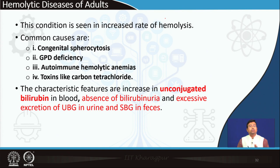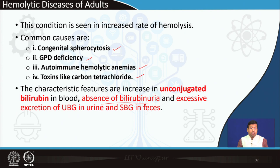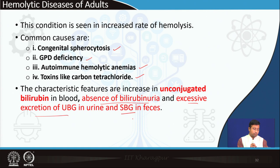In adults, there can also be excess hemolysis due to hereditary spherocytosis, glucose-6-phosphate dehydrogenase deficiency leading to hemolytic anemia, autoimmune hemolytic anemia, and carbon tetrachloride toxicity. All of these lead to excess bilirubin that exceeds the albumin binding capacity — it remains unconjugated in blood. There is absence of bilirubin in urine (acoluric jaundice) because unconjugated bilirubin cannot be excreted in urine. However, there is excessive excretion of urobilinogen in urine and stercobilinogen in feces.